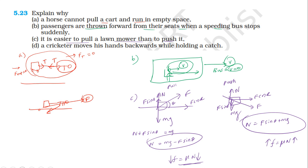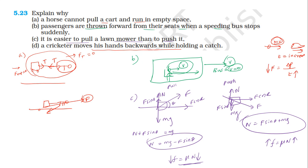A cricketer moves his hands backward while holding a catch. As the ball moves to the hand, by moving hands backward the cricketer increases the time taken to stop the ball. Since impulse equals change in momentum, and force equals change in momentum divided by time, increasing time reduces the force acting on the hands.